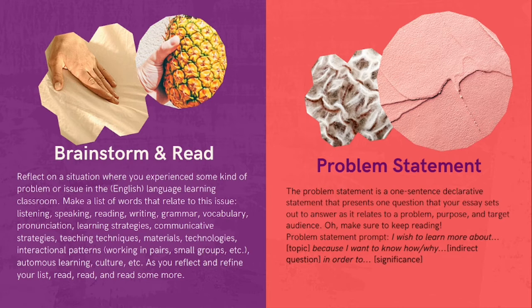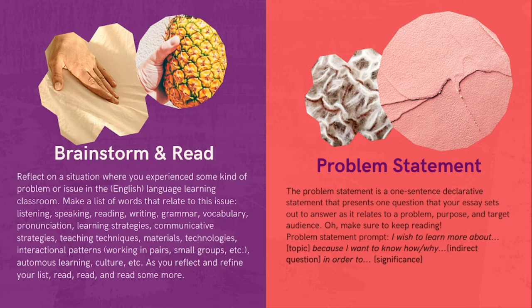We started off brainstorming, reading academic peer-reviewed journal articles to try to find some sources and ways that we can narrow down our topic. We started off by listing out keywords that might relate to some kind of problem that we've experienced in the English language classroom. We created a word association — different words that relate to a topic, that relate to a problem, something that we're interested in, and something that we can find articles on. We really need to make sure that we can find articles that relate to some kind of problem.